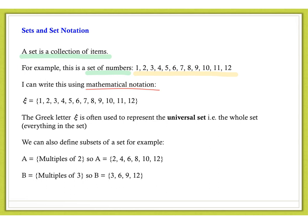Here, you see the Greek letter Xi, which denotes what we call the universal set. So, in our example, the universal set is the full set of numbers within our set, which is all of the numbers, the integers, between 1 and 12. So to identify that we're talking about the whole set, we use this symbol here.